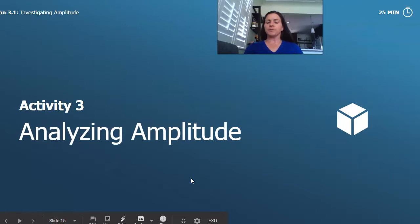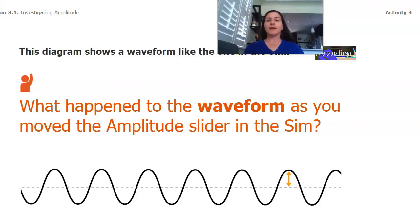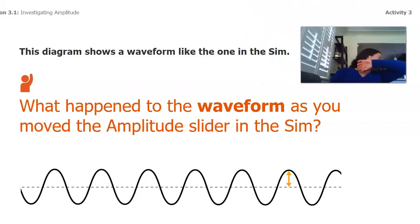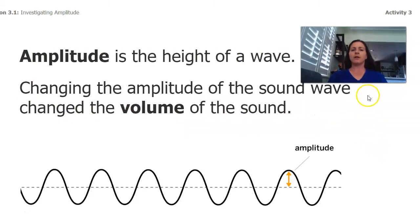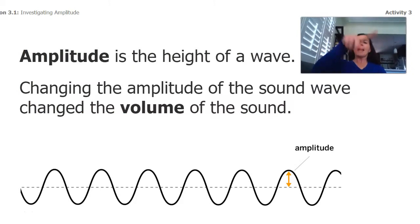So let's think through that. So this diagram shows a waveform, like the one in the sim. So what happened to the waveform as we moved the amplify slider in the sim? Well, we just thought about that for our page 47. So it looked like amplitude is how high that wave was. When we made the amplitude higher, the wave got higher. And another thing that I noticed, and you probably noticed too, is the sound got louder.